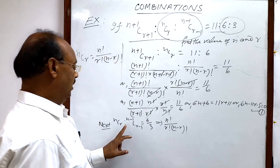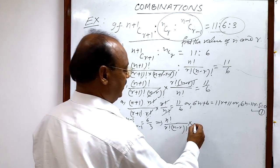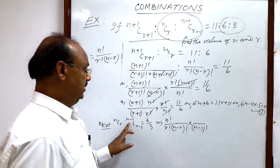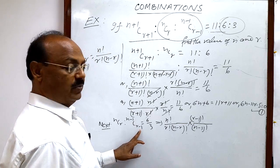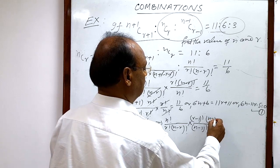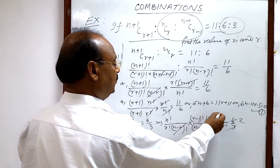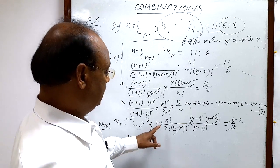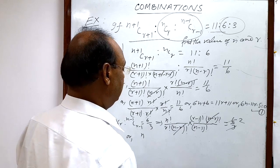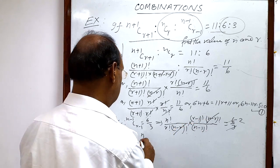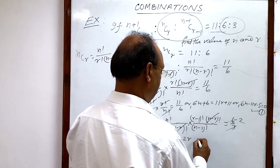So nCr can be written as n factorial by r factorial into (n minus r) whole factorial. Converting the ratio sign into multiplication, (n-1) factorial comes into the numerator, along with (r-1) factorial and (n minus r) factorial. This equals 6 by 3, which is 2. The (n minus r) factorial cancels out. Then (n-1) factorial cancels with n factorial leaving n, and (r-1) factorial cancels with r factorial leaving r. So n divided by r equals 2, giving us n = 2r.